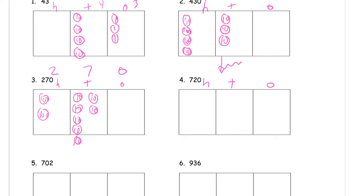So 720, seven, two, zero. We need seven hundreds, one, two, three, four, five, six, seven. And then our tens, we need two tens, and we don't need any ones, so we're done with 720.